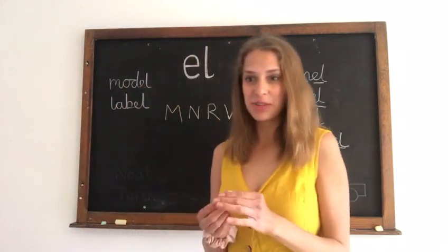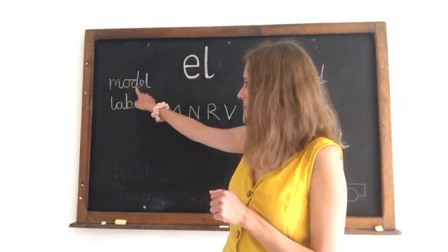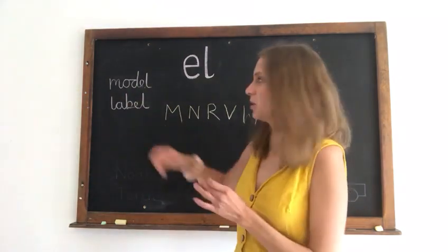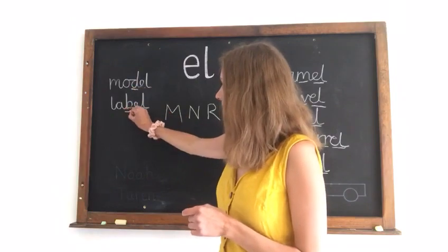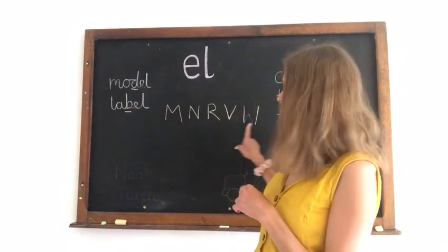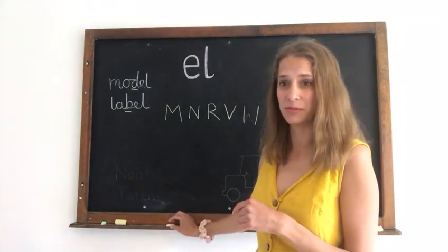But as always, there's exceptions to the rule. So if we look at model and label, there's a D here, and a B here. So those don't fit our rule. And I'm sure you could find lots more.